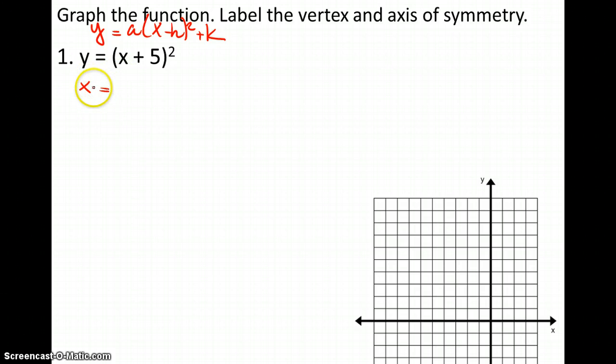So what we're going to do is first, let's look at the axis of symmetry. x is equal to, it says h here, the opposite of h. So this is going to be negative 5. And my vertex is going to be negative 5, comma, this is not plus anything, so I'm going to put 0.